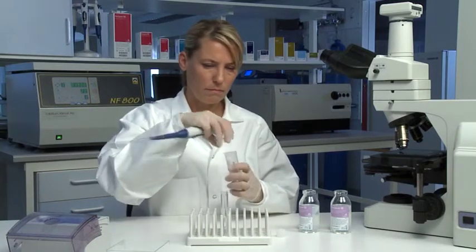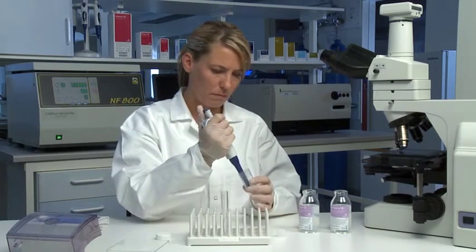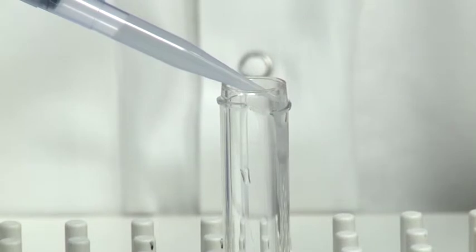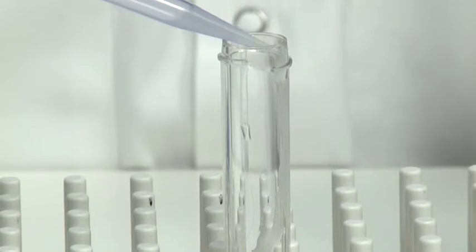Layer 3ml of PureSperm 80 ejaculate over the PureSperm 40. Prepare two gradients if the volume of the ejaculate is more than 1.5 milliliters in order to avoid overloading the gradient. Two gradients can also balance each other in the centrifuge.